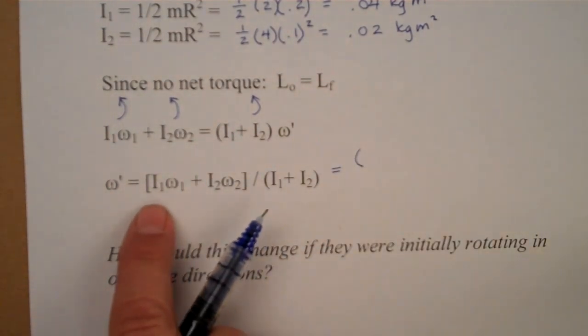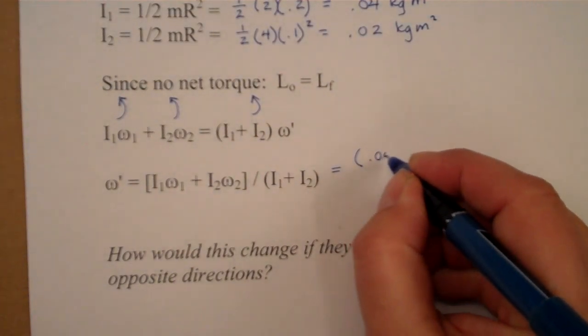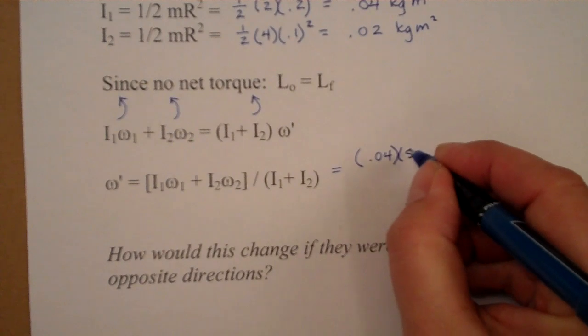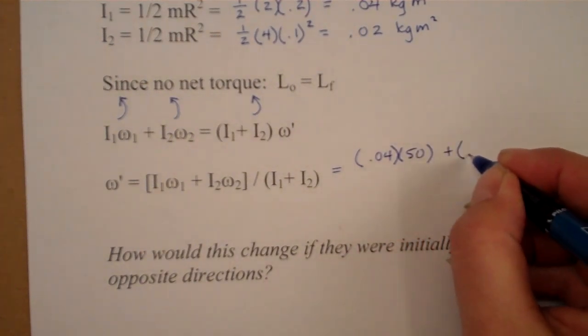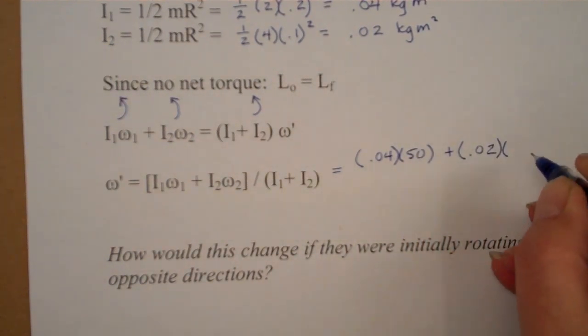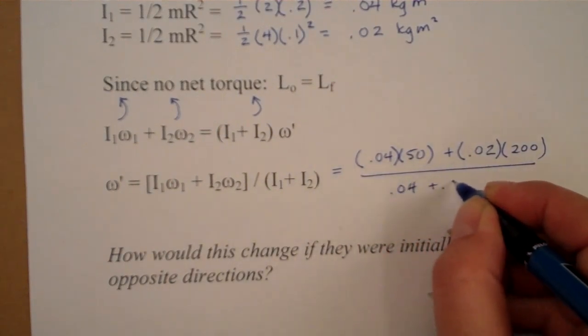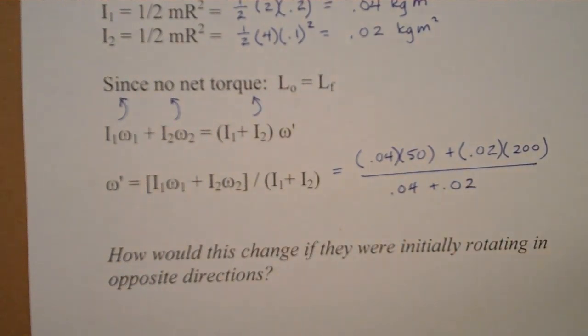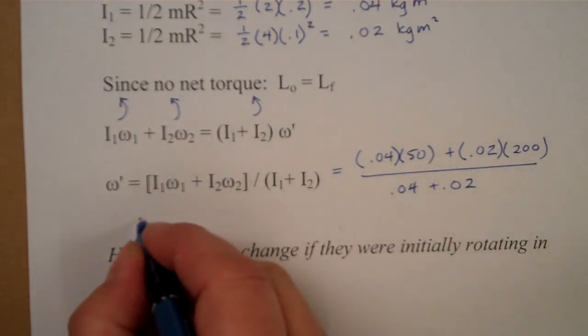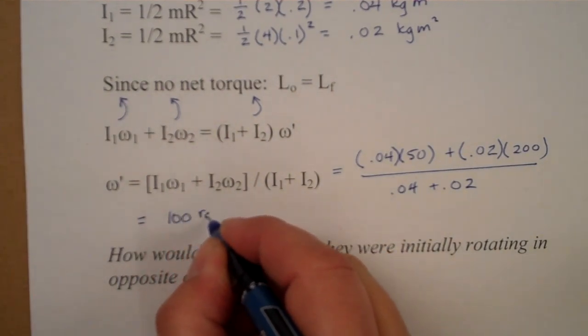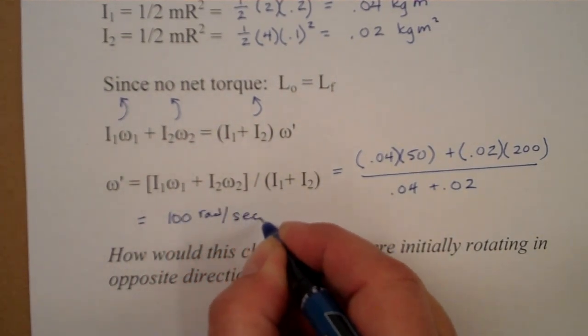So, if we put in these values, I1 was 0.04, its initial angular speed was 50. I2 0.02, its initial angular speed was 200, and then we're going to divide through by the total moments of inertia, and that gives us 0.06. If you put all of those values into your calculator, you'll end up with a value of 100 radians per second.